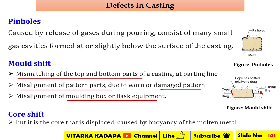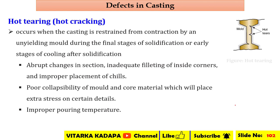The next defect is core shift. Instead of the mold, if a core is placed between the parts and that core has a misalignment, we are talking about core shift. It is caused by the buoyancy of the molten metal — since the core is a free part inside the casting, a large buoyancy force can push it upward, making core shifts common.